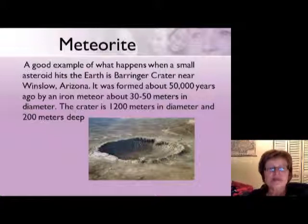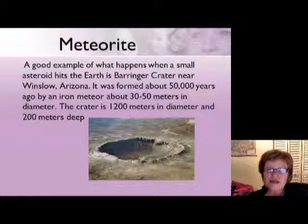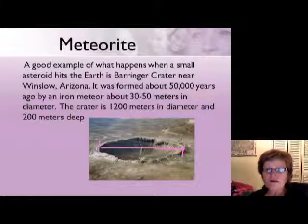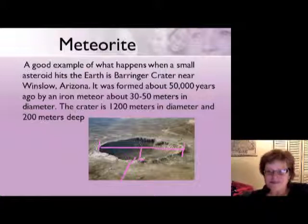The crater is very close to Winslow, Arizona, and it happened about 50,000 years ago. It was hit by an iron meteorite about 30 to 50 meters in diameter. The Barringer Crater is about 1,200 meters — about 4,000 feet — in diameter and about 200 meters deep, so it's quite deep. I've been there; you can go there and actually climb down into the crater. It's a really great excursion, though it's pretty hard, so be careful.